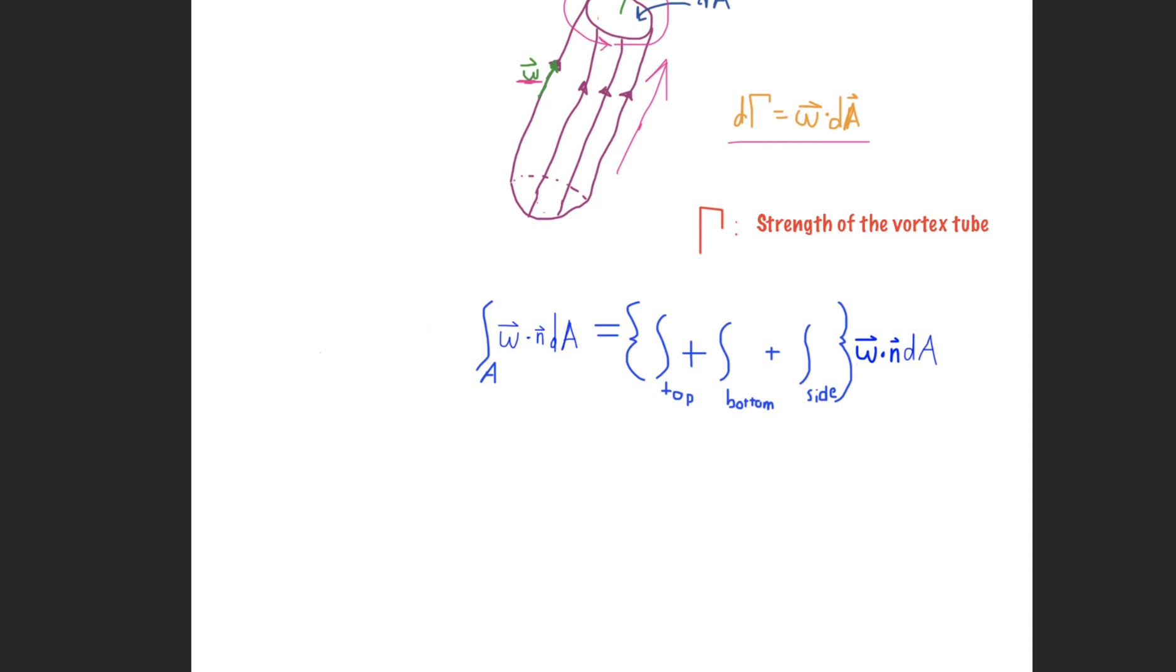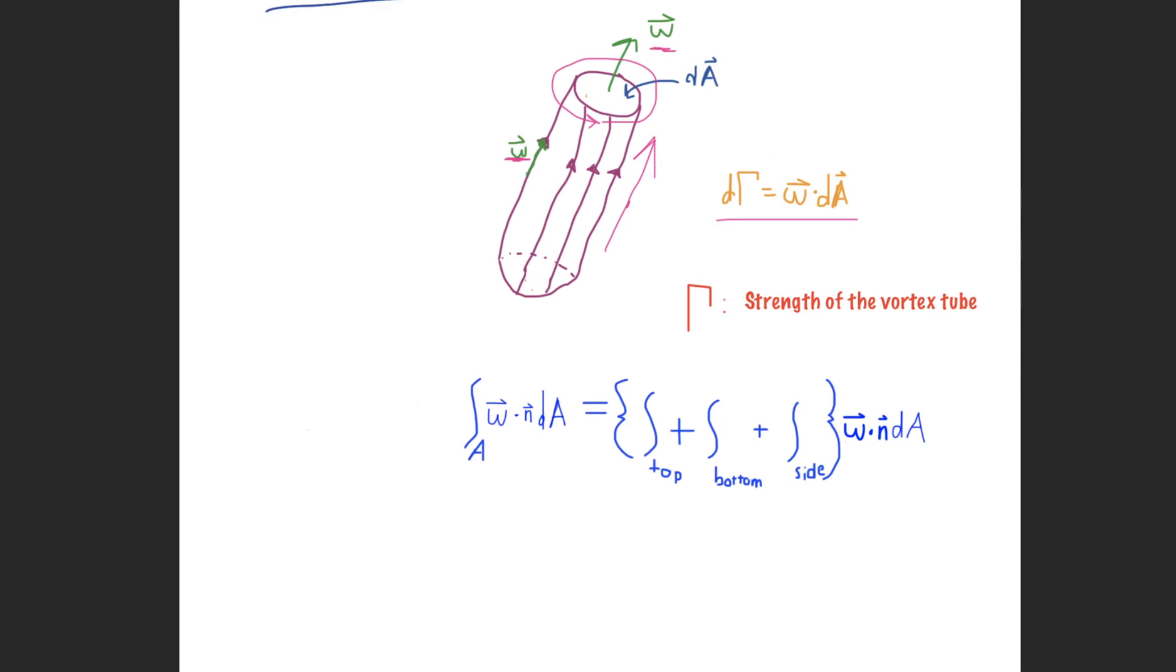The top component corresponding to the vorticity through this surface area, the bottom component which is the vorticity flowing into this surface area, and the side component. And the side component we know is going to go to zero, so you can get rid of that immediately.